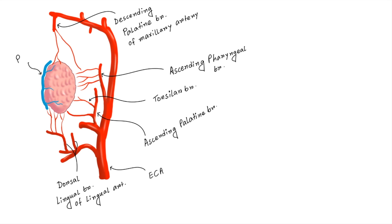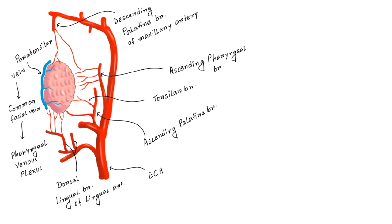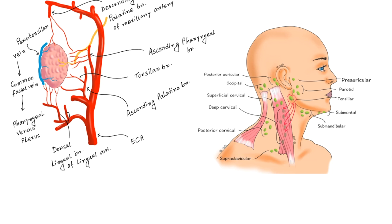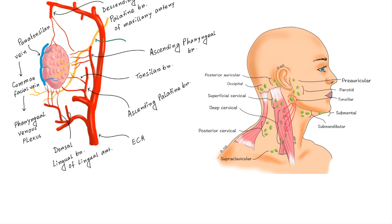For venous drainage, blood from the tonsil drains into the paratonsillar vein, which in turn drains into the common facial vein and pharyngeal venous plexus. Lymphatics from the tonsil pierce the superior constrictor and drain into the upper cervical lymph nodes, especially the jugulodigastric lymph node. An important clinical point: an enlarged and non-tender jugulodigastric lymph node is a sign of chronic tonsillitis. The tonsil is supplied by the lesser palatine branch of the sphenopalatine ganglion and the glossopharyngeal nerve.